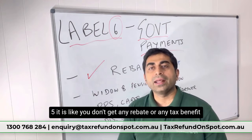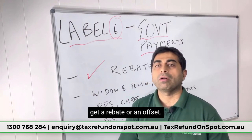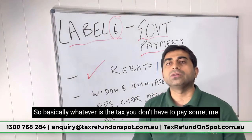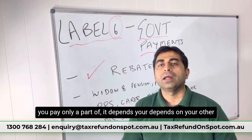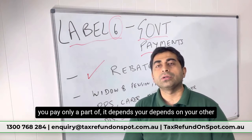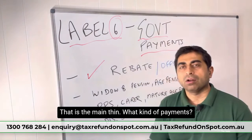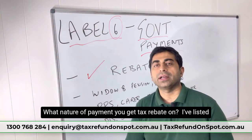At Level 6, the benefit is that you get a rebate or an offset. Basically, whatever tax you owe, you either don't have to pay some of it or you pay only a part of it — it depends on your other income. So you get a tax benefit; that is the main thing.